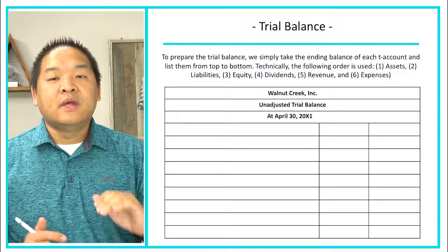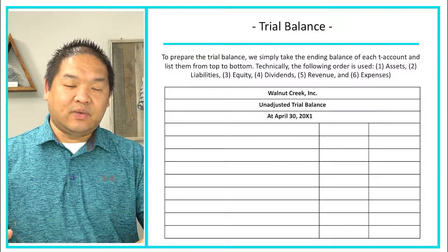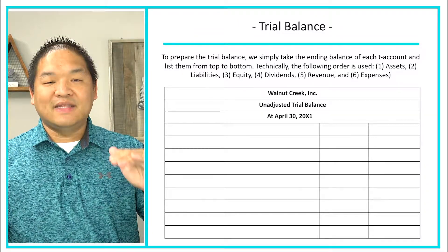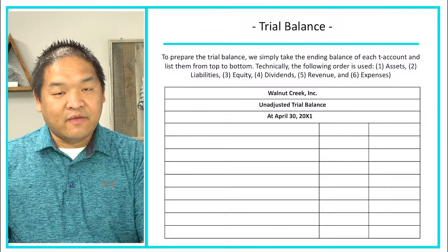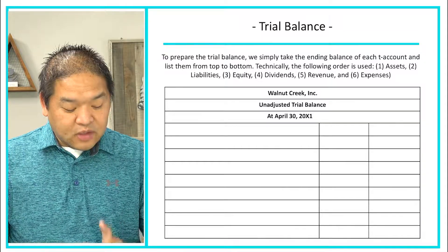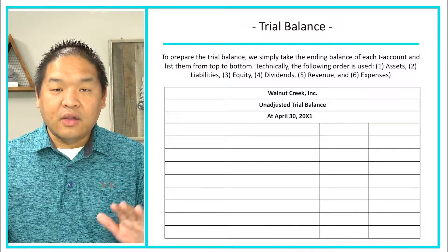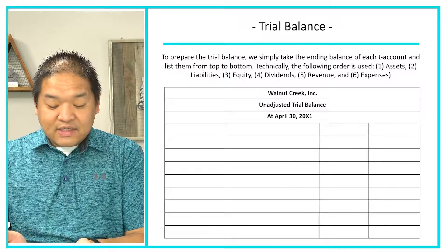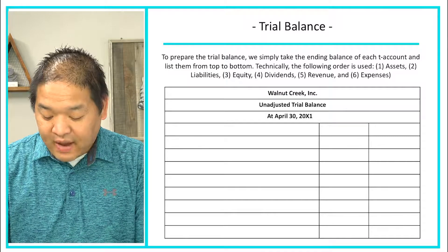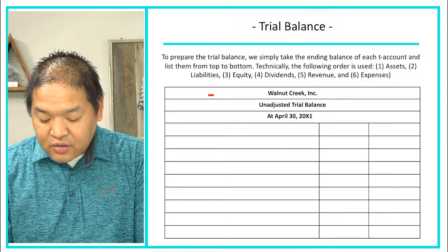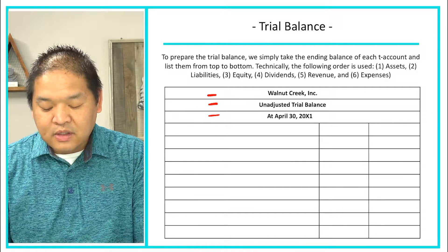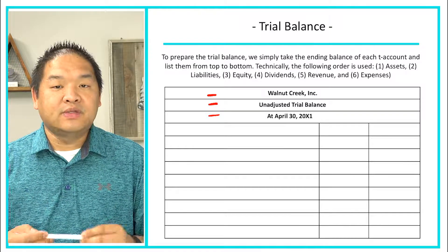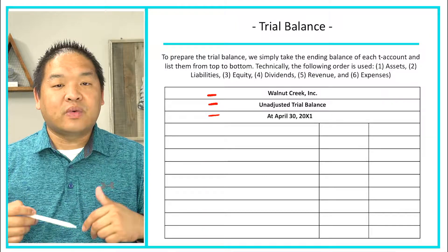We also list accounts from most liquid to least liquid — you'll hear that a lot especially when we talk about the balance sheet. Up at the top of the trial balance we have the who, what, and when: this is Walnut Creek Inc.'s unadjusted trial balance. We call it 'unadjusted' because in a later section we'll cover adjusting entries.